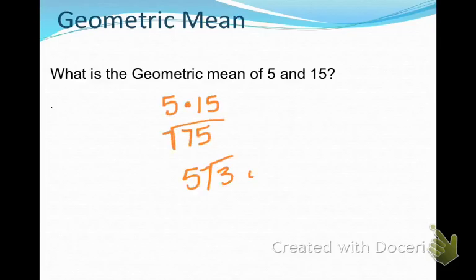Okay, now hopefully you multiplied those together, took the square root of it, and you should have either gotten 5 square root of 3 or 8.66, depending on whether you answered as a decimal or simplest radical form. I think you are ready to start your assignment.